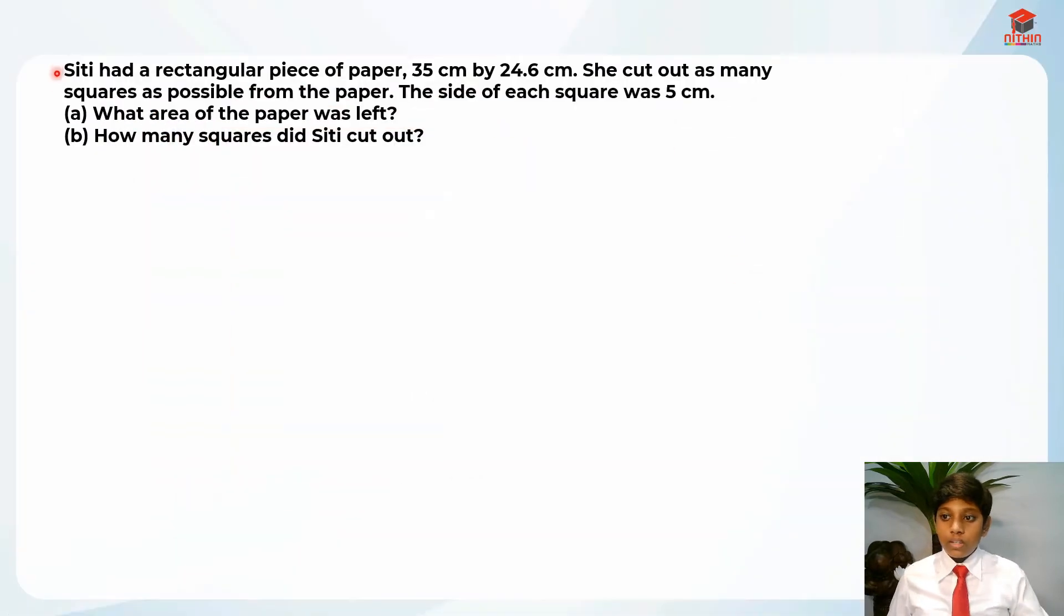This over here is question 4 and this question is testing us on area and perimeter. Let's read the question first. City had a rectangular piece of paper, 35 cm by 24.6 cm. She cut out as many squares as possible from the paper. The size of each square was 5 cm. Part A, what area of the paper was left?